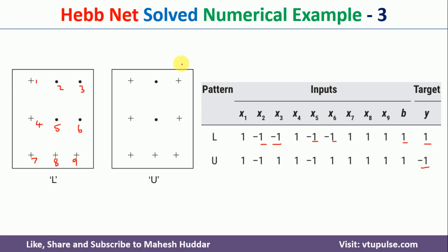Now converting pattern U into numbers: counting positions 1 through 9, positions 2 and 5 are -1 and all remaining positions are +1. So x2 and x5 are -1, and the rest are +1. As stated, L is class 1 and U is class -1.